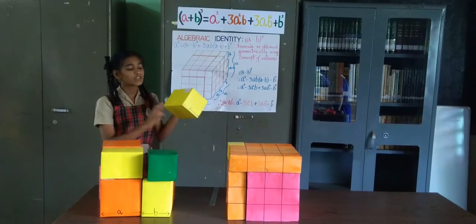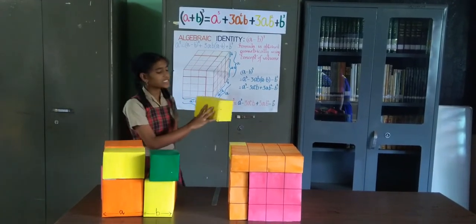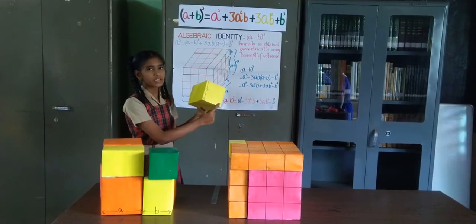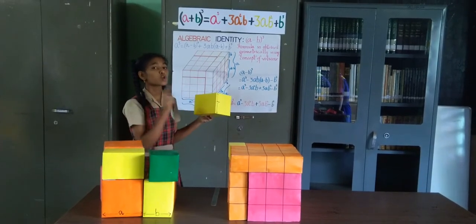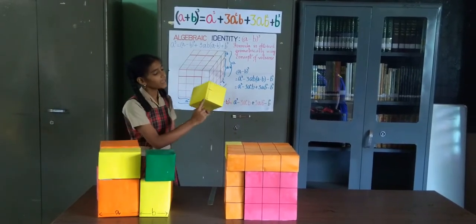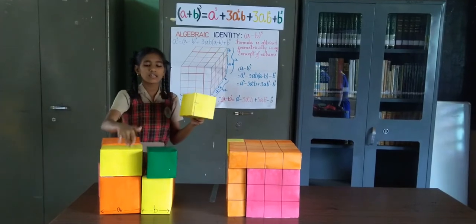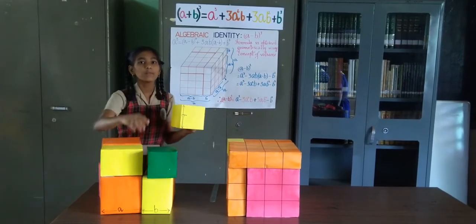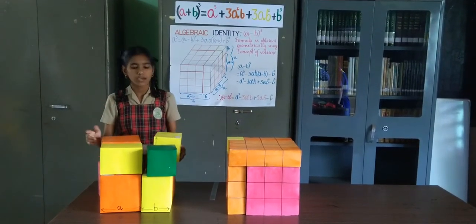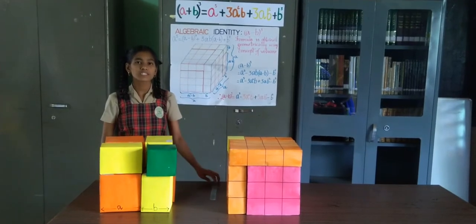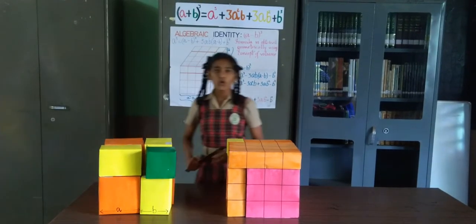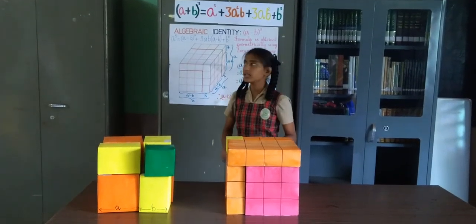Similarly, there are three cuboids, each of length A units, breadth B units, and height B units. So the volume of each is AB squared. Since there are three of them, we have 3AB squared. Thus, the algebraic expansion of A plus B the whole cube can be explained geometrically.